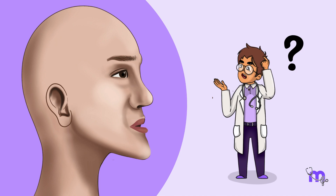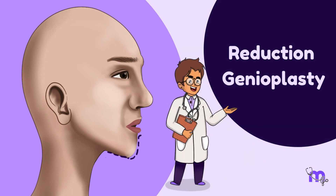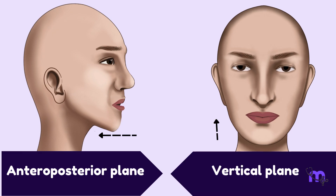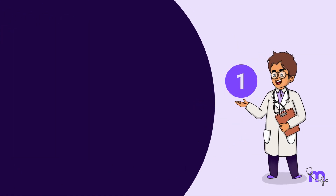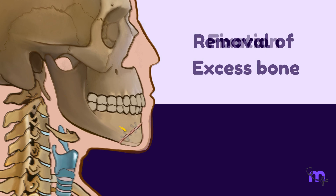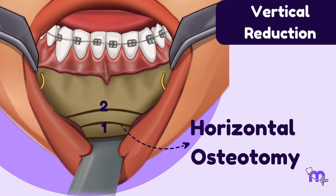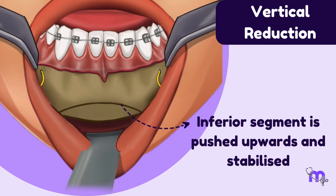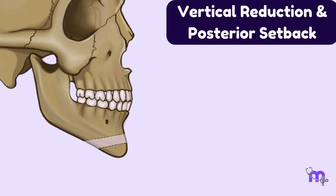Have a look at patient C. In this case, you would like to reduce the projection of his chin. This is done with reduction genioplasty. The symphysis region can undergo reduction in both the anteroposterior and vertical planes based on the patient's needs. This surgical approach is often used as an adjunctive procedure. There are three types: first, horizontal osteotomy and setback — the excess bone is removed and the fragment is fixed; second, vertical reduction — two horizontal osteotomy cuts are made, a bony wedge is removed, and the inferior segment is pushed upwards and stabilized; third, vertical reduction and posterior setback — where both vertical reduction and a posterior setback may be necessary.